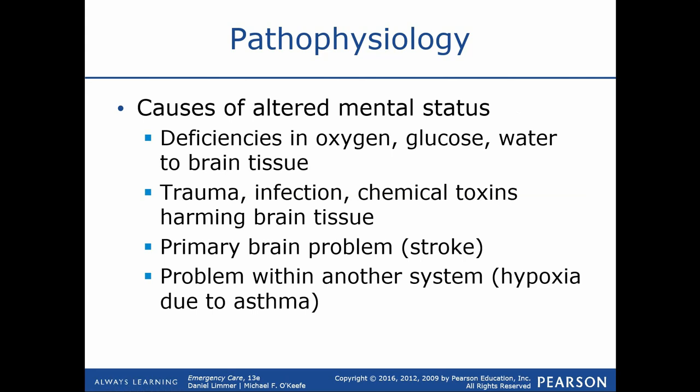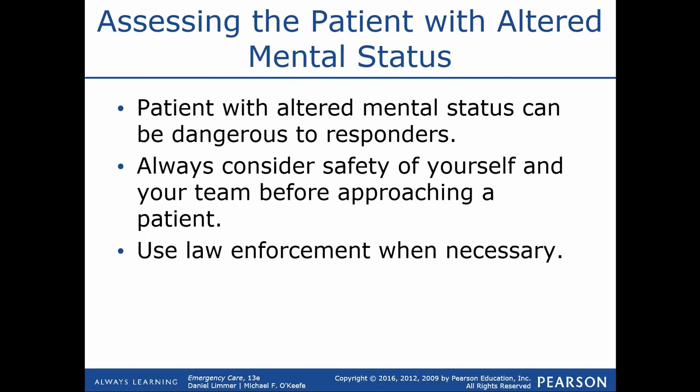Trauma, infection, and chemical toxins — things like drug use and alcohol — are all underlying conditions that can contribute to altered mental status. We also have things like stroke that we'll talk about today. Because all of these are very serious conditions, we have to quickly be able to rule them out.